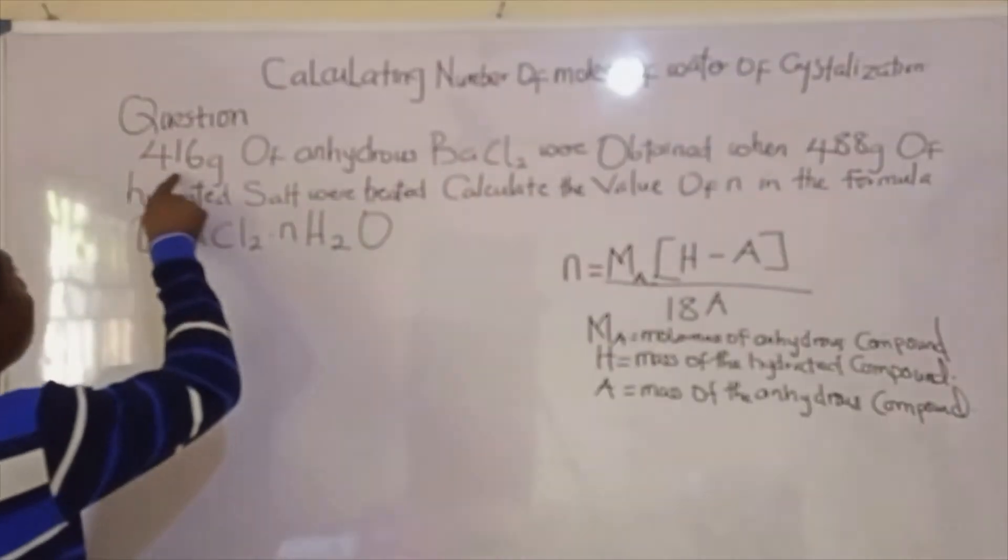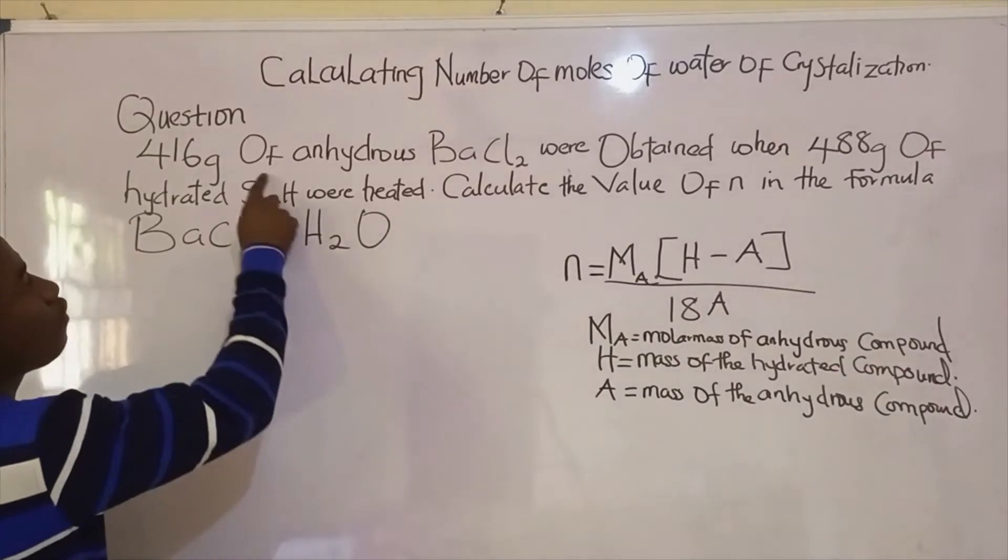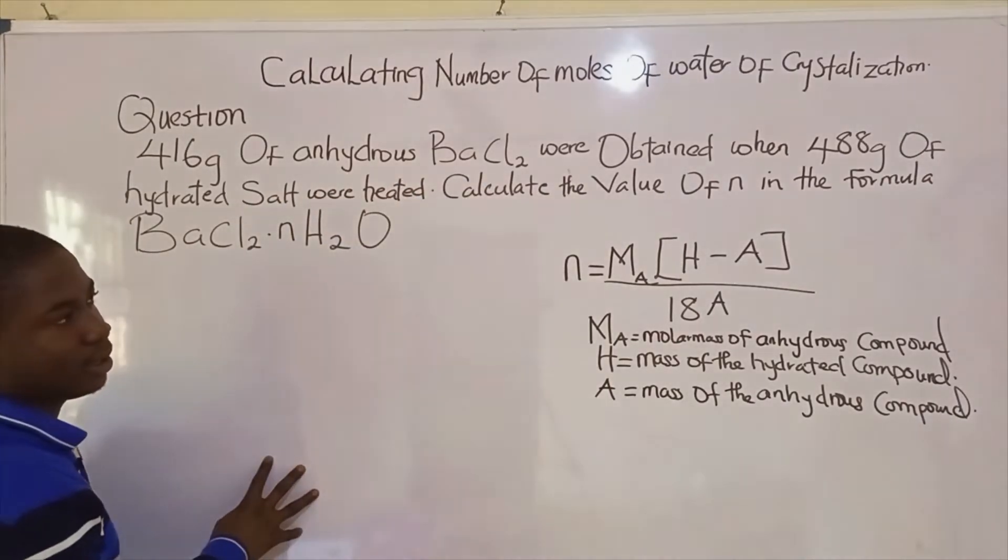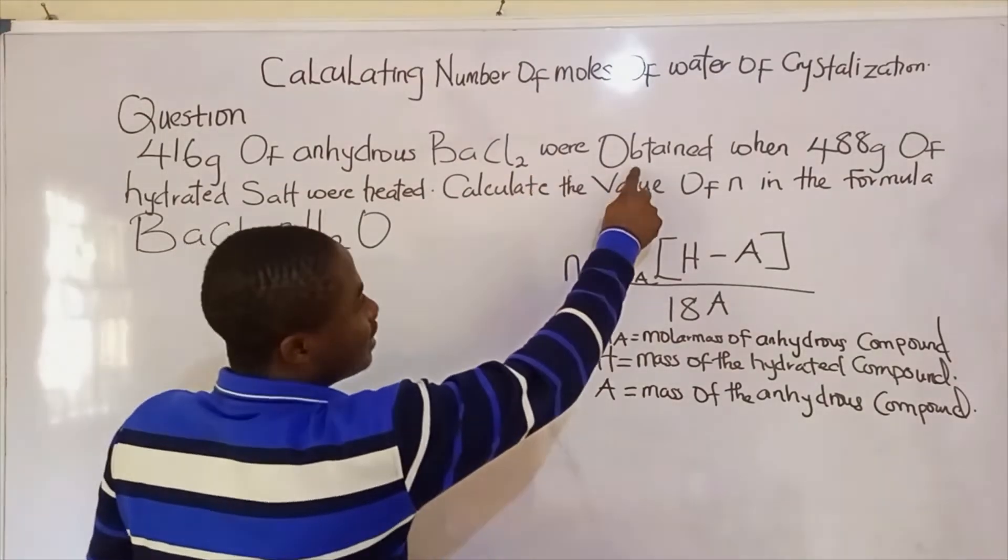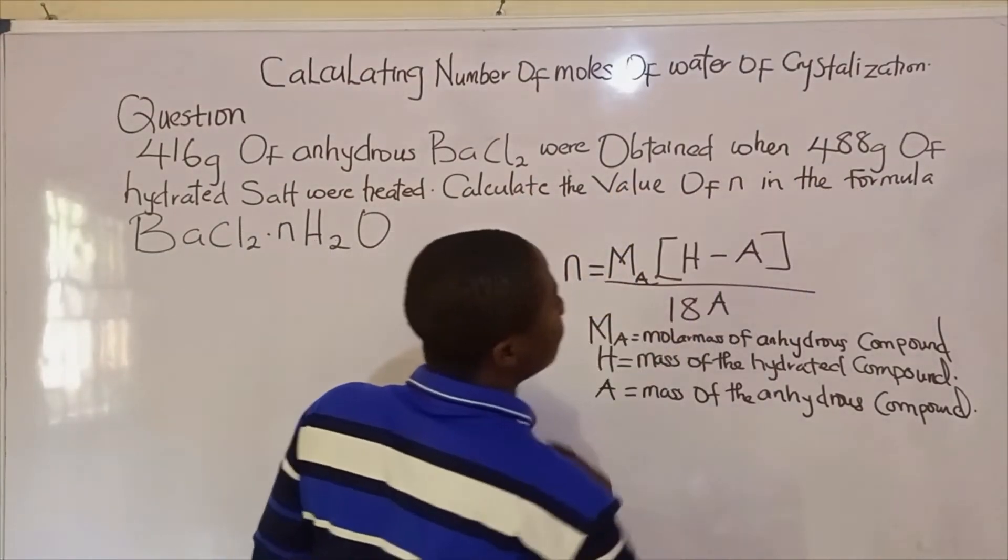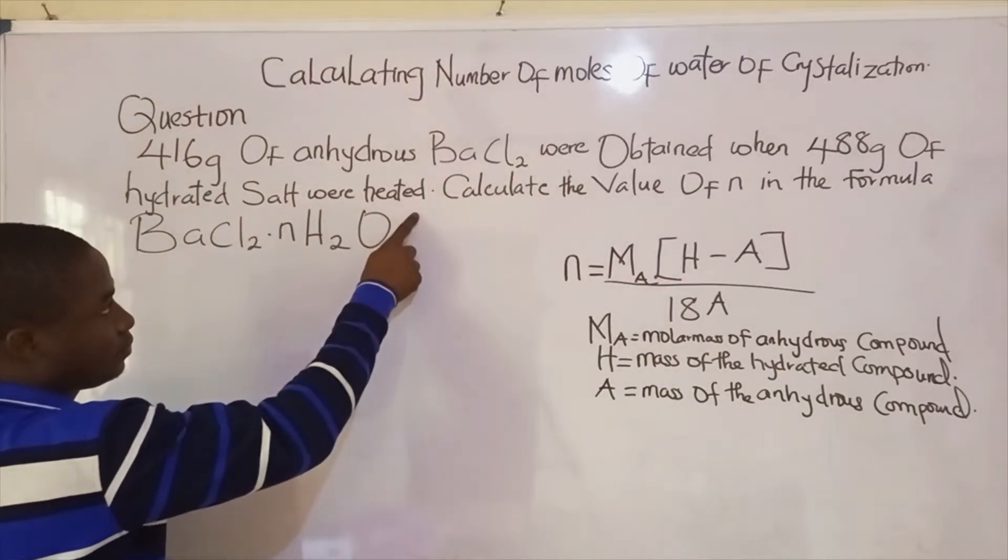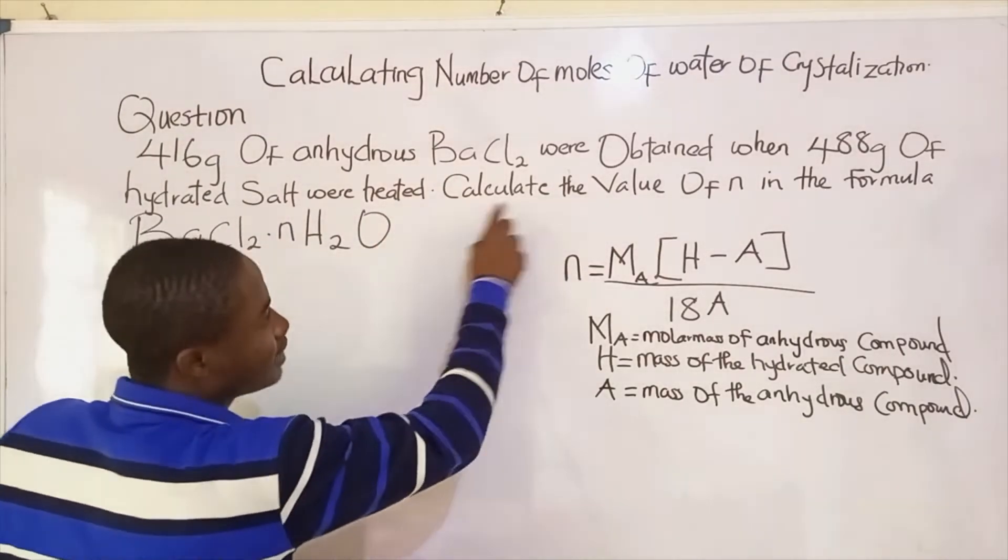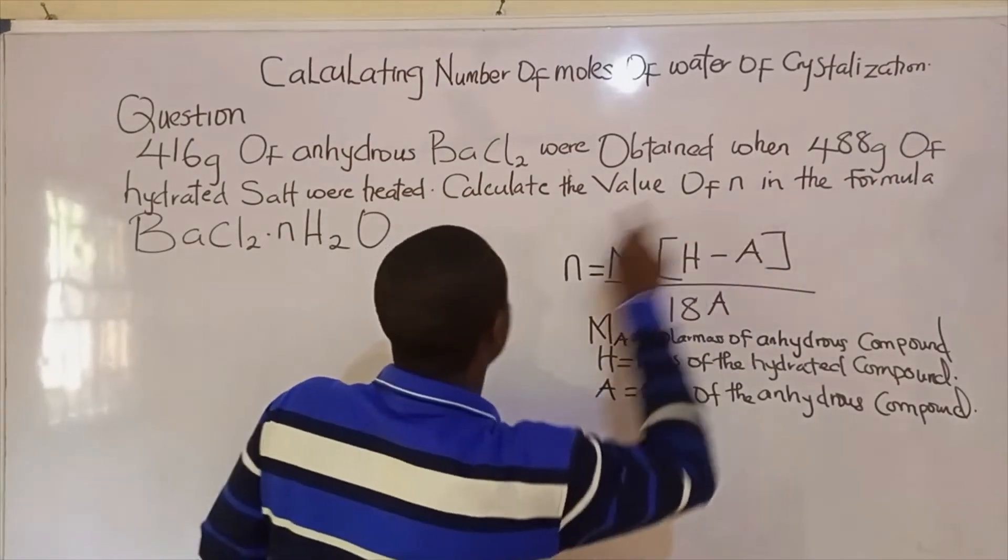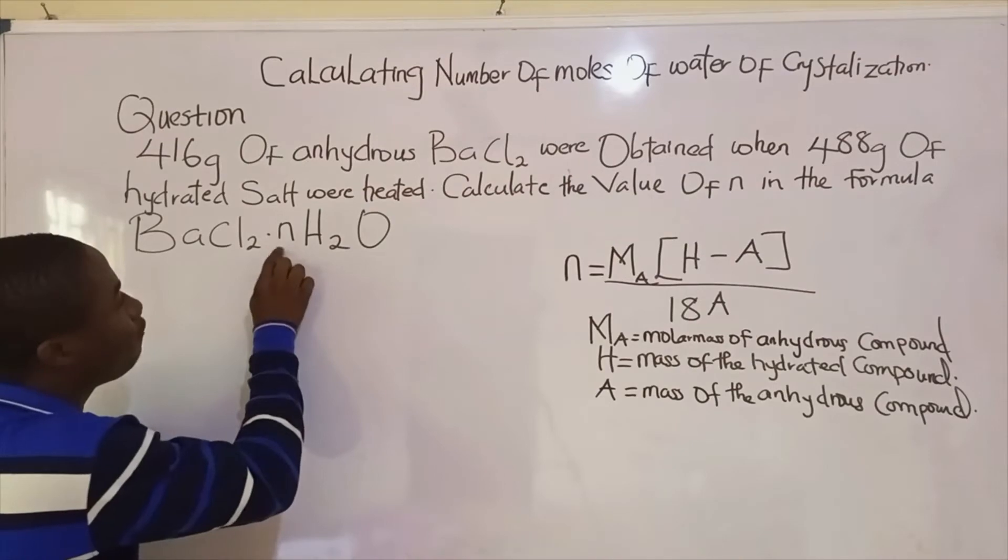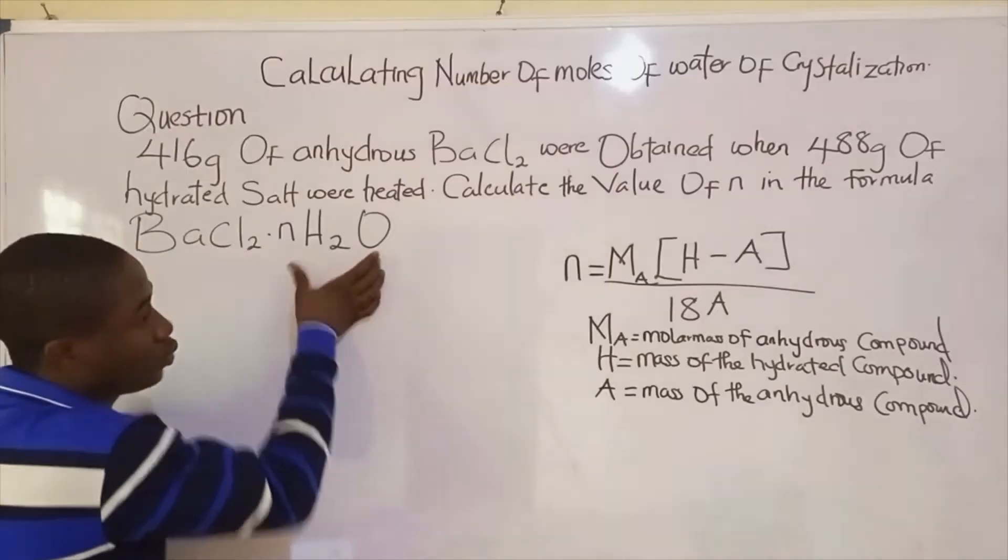The question is: 416 grams of anhydrous barium chloride were obtained when 488 grams of hydrated salt were heated. Calculate the value of N in the formula BaCl₂·nH₂O. So basically they ask us to get the number of moles of the water of crystallization.